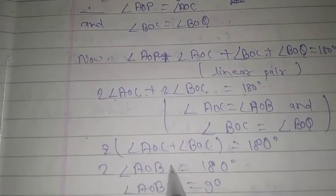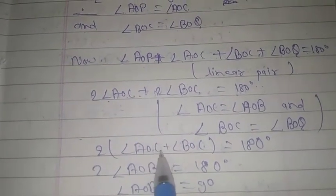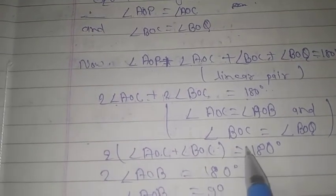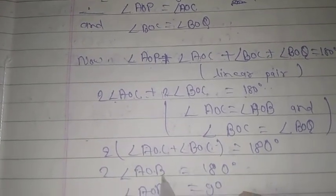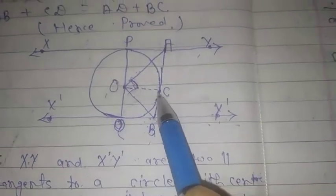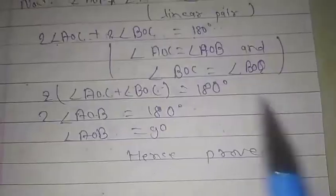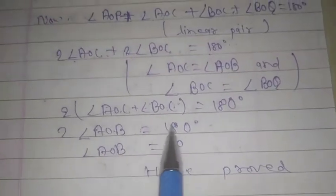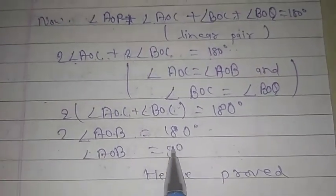2 angle AOB, because angle AOC plus angle BOC equals angle AOB. So 2 angle AOB equals 180 degrees. Angle AOB equals 90 degrees. Hence proved.